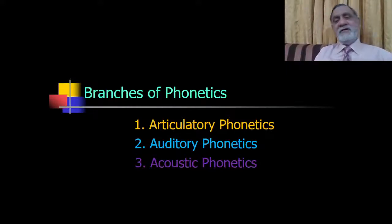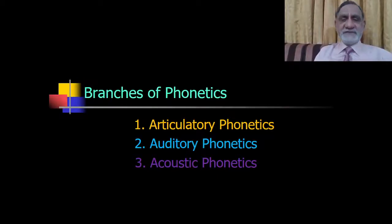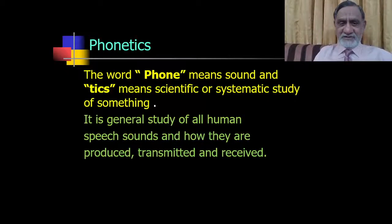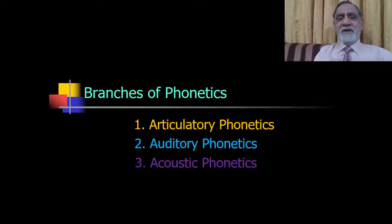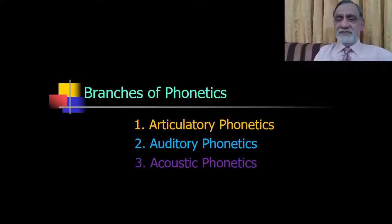From this definition we have a deduction: there are three main branches of phonetics — based on how sounds are produced, transmitted, and received. The three branches are: articulatory phonetics, auditory phonetics, and acoustic phonetics.